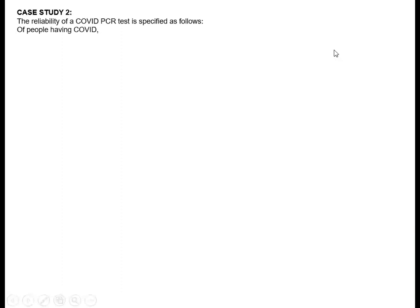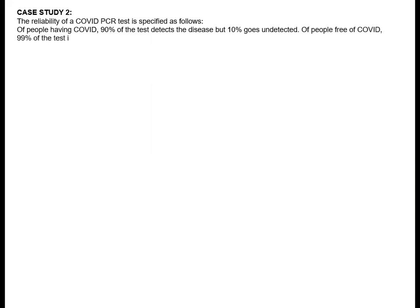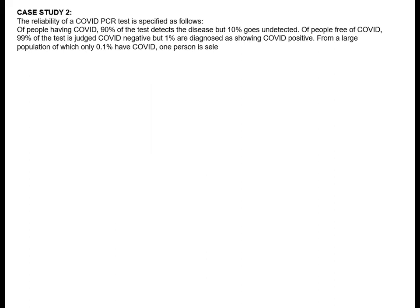The question is: the reliability of a COVID PCR test is specified as follows. Of people having COVID, 90% of the test detects the disease but 10% goes undetected. Of people free of COVID, 99% of the test is judged COVID negative but 1% are diagnosed as showing COVID positive. From a large population of which only 0.1% have COVID, a person is selected at random, given the COVID PCR test, and the pathologist reports them as COVID positive.